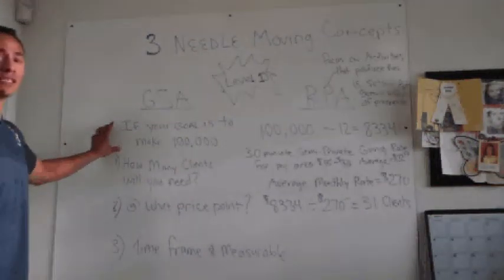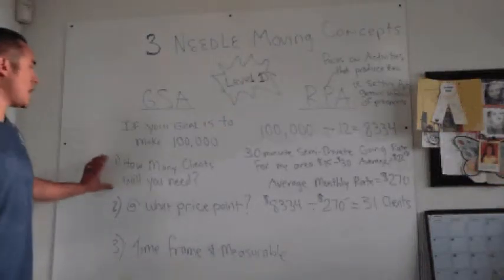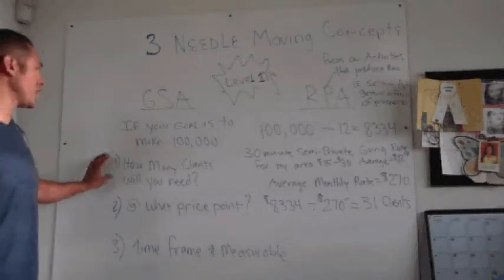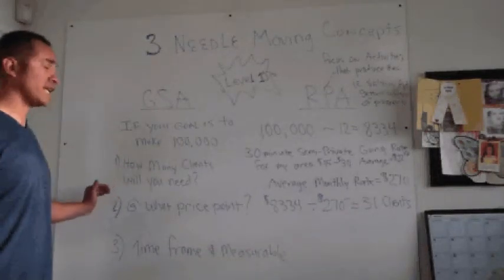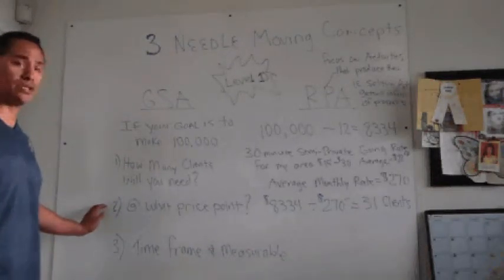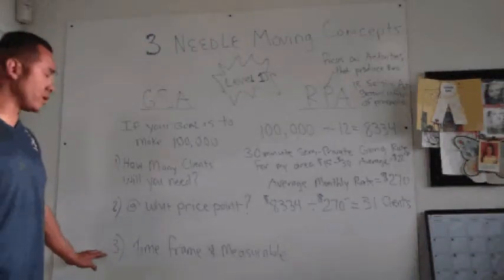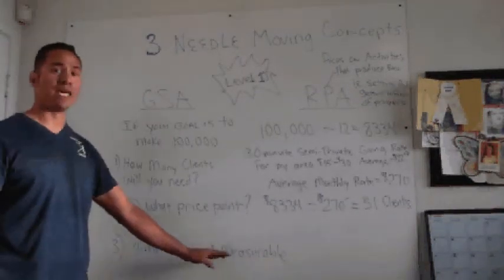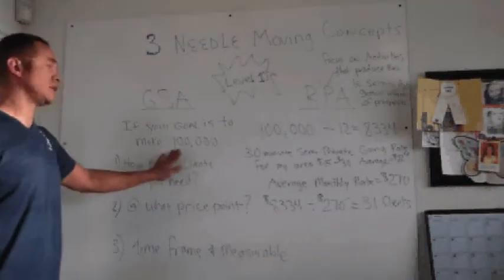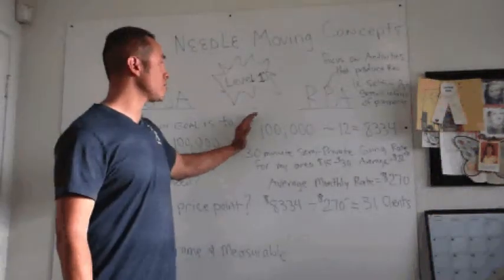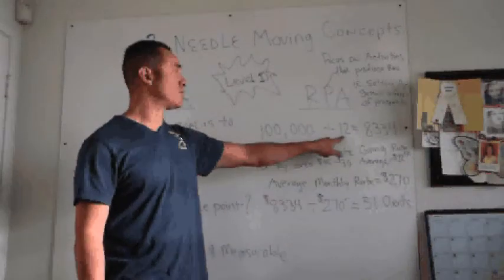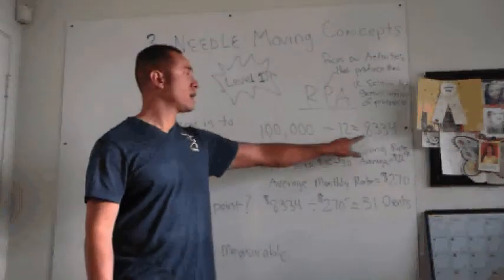For example, if your goal is to make $100,000 a year. Question number one: how many clients will you need to make $100,000 and at what price point? Question number two, lastly number three: what is the time frame and make it measurable that you want to obtain that goal.